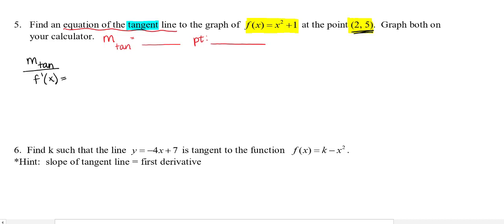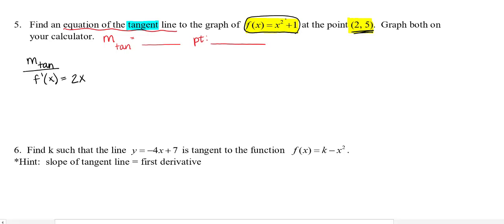This is the part where we use the power rule. Looking at f(x), f'(x) is found by bringing down the two, keeping the base x, then subtracting one from the exponent — so it's x to the first. The plus one falls off. This gives me the slope of the tangent line for any point x along the f(x) curve.